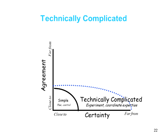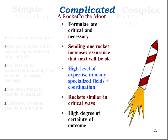When we move further out on the uncertainty dimension, things become technically complicated because there are lots of different parts that have to be coordinated to get the desired outcome. The metaphor here is sending a rocket to the moon. There's a formula, and sending one rocket increases the likelihood of another one working out, but it requires a high degree of specialization and expertise in many fields. Both of the shuttle disasters — where shuttles blew up — were examples of a complicated situation where one small part, the O-ring in the first shuttle, the piece of foam in the second, led to the failure of the entire mission. A non-linear effect: one small failure led to the failure of the entire mission.